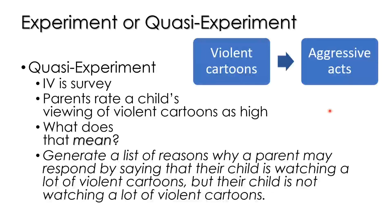Now let's see what happens when we go to the quasi-experiment. The quasi-IV is now the survey. Parents rate a child's viewing of violent cartoons as high — let's say that for an example. What does that mean? When you send out a really good questionnaire to the parents — good reliability, good validity — you get a number from a parent indicating how much violent cartoons the child watches. So what does that number mean?